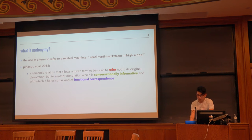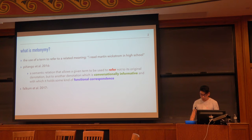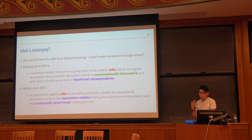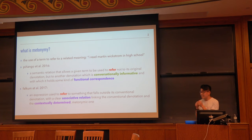From our 2016 paper, we say that metonymy is the semantic relation that allows a given term to be used to refer, not to its original denotation, but to another one which is informative and for which it has some functional correspondence. From a paper by Eve Clark and colleagues, we see a similar definition: metonymy is an expression used to refer to something that falls outside of its conventional denotation and has a clear associative relation linking that conventional denotation and a contextually determined one.